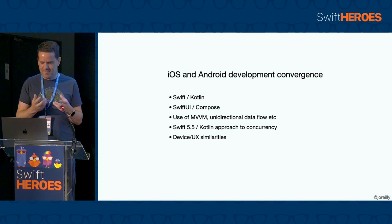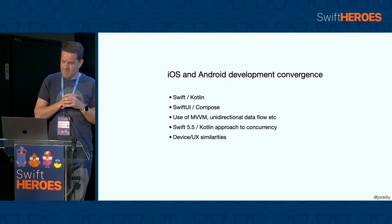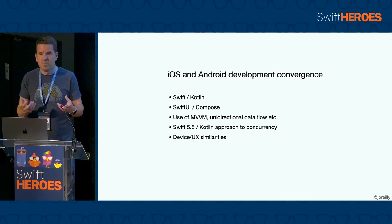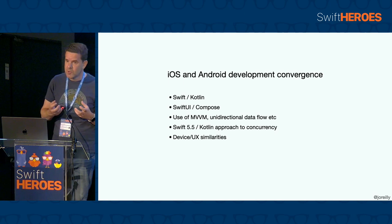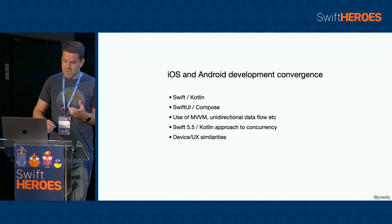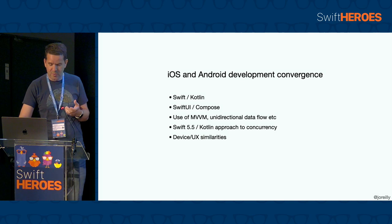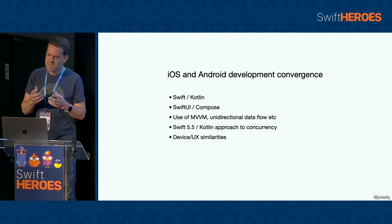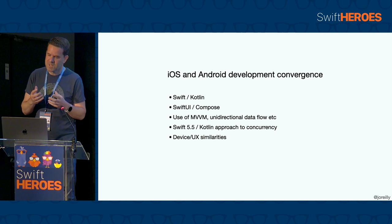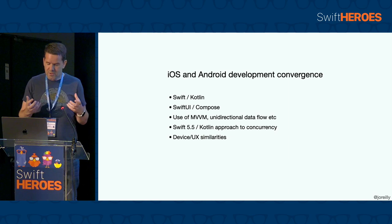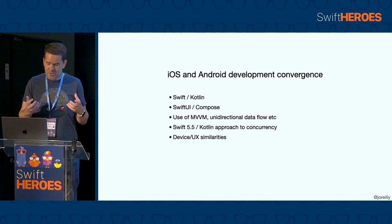As the title suggests, we're going to talk today about a couple of key areas that have contributed to the increasing convergence of native iOS and Android development. First up, we'll cover some examples of how similar the Swift and Kotlin languages are. But more impactful, I think, are the very similar approaches we now have on both iOS and Android for UI development using SwiftUI and Compose, and more recently, much the same mechanisms for managing concurrency on both platforms. We've also converged to a large degree on use of MVVM on both platforms, or at least a unidirectional data flow type variation of it. Also interesting to note how similar Android and iOS devices have become and the closer alignment of UX patterns.